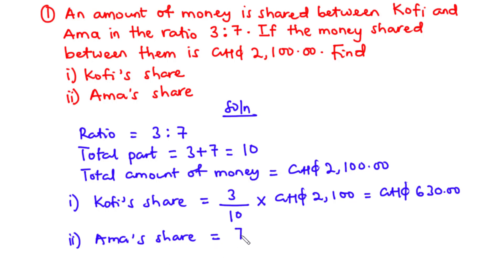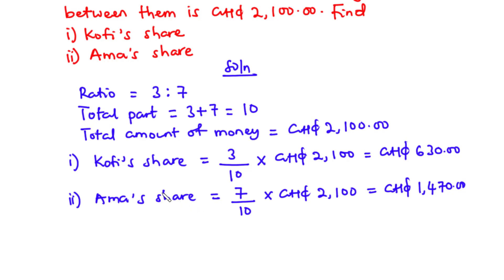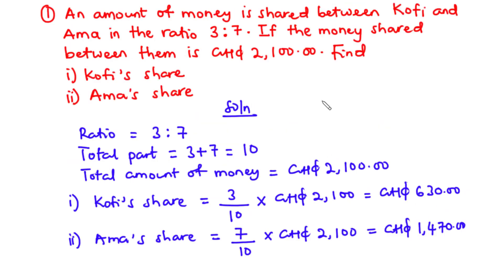Ama's share is 7 divided by 10 times 2100 Ghana cedis, which equals 1470 Ghana cedis. Alternatively, you can find Ama's share by subtracting Kofi's share from the total amount: 2100 minus 630, and you still arrive at 1470 Ghana cedis. That is how to share an item between two persons in a given ratio.